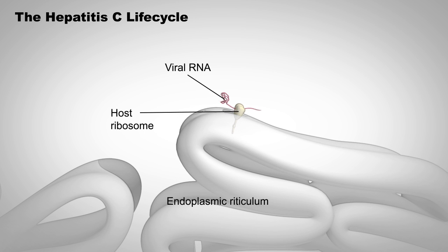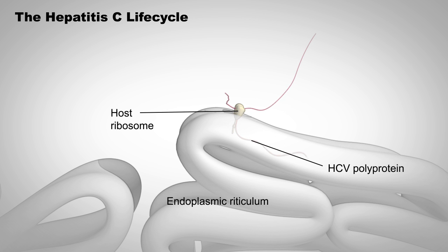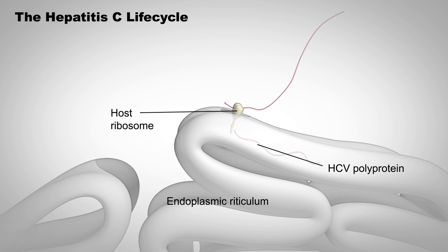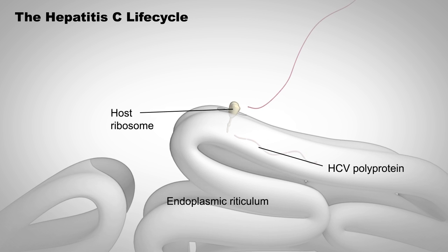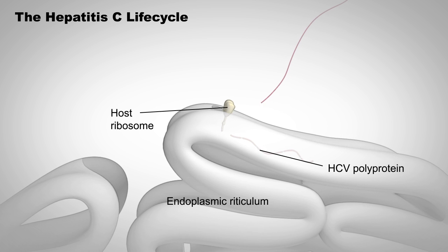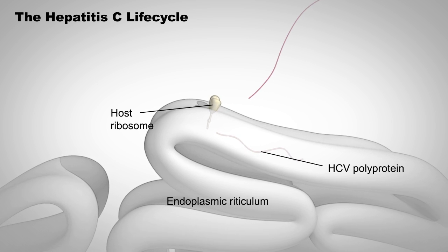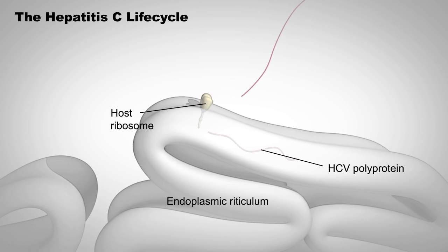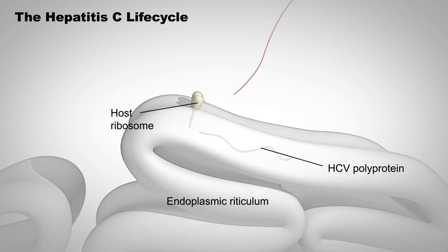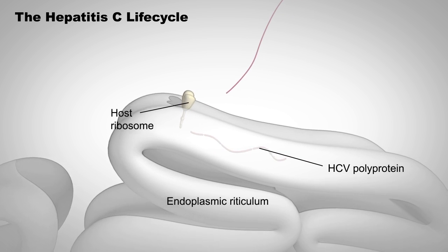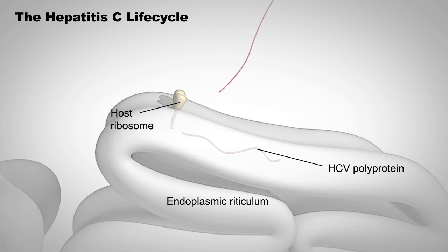Ribosomal subunits associated with the rough endoplasmic reticulum serve as translation units, converting the message coded in the mRNA to a specific sequence of amino acids — the HCV polyprotein.